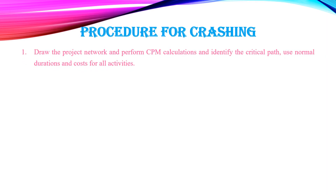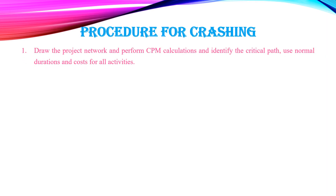Procedure for crashing: Step 1 — Draw the project network and perform CPM calculations to identify the critical path, using normal durations and costs for all activities. Step 2 — Compute the cost slope for each activity using the equation: Cost Slope = (Crash Cost − Normal Cost) / (Normal Time − Crash Time).